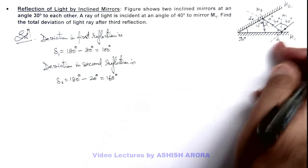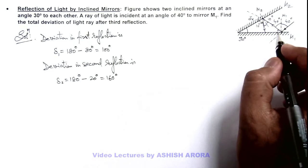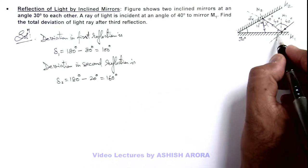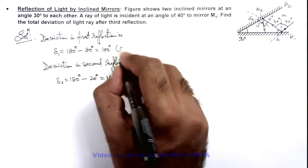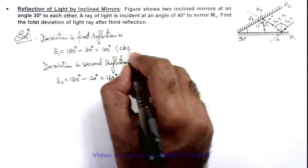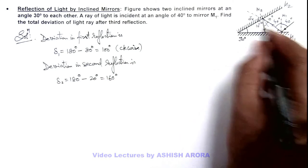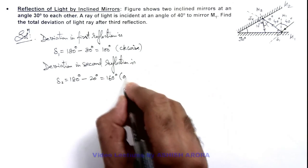You can see all these deviations are taken in a particular way — the first deviation is a clockwise deviation, and now here it is an anti-clockwise deviation direction.